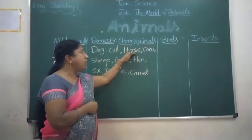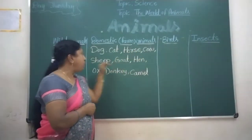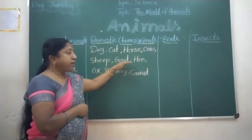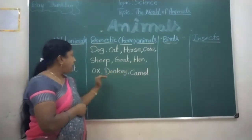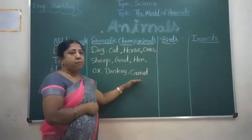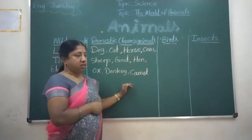Domestic animals: dog, cat, horse, cow, sheep, goat, hen, ox, donkey, camel, et cetera.